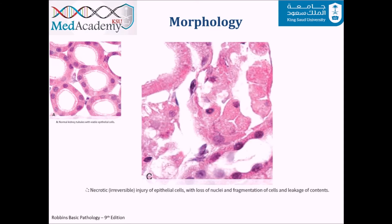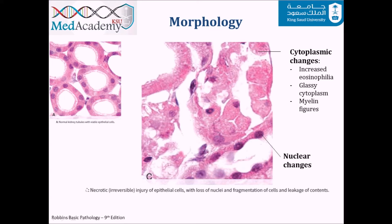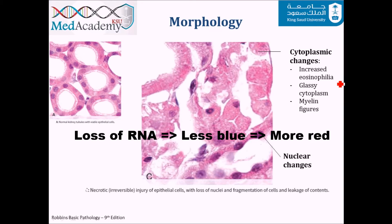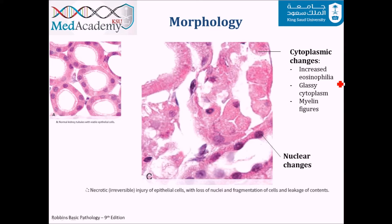In the necrotic cell, we have cytoplasmic changes and nuclear changes. In the cytoplasm, we're going to have increased eosinophilia — increased redness of the cytoplasm. This happens because RNA is basophilic and stains blue, and its loss increases redness; additionally, eosin binds to denatured proteins, intensifying eosinophilia. Second is glassy cytoplasm: normally the cytoplasm is heterogeneous, but when a cell is necrotic it loses all its glycogen, resulting in a more homogeneous-looking cytoplasm we call glassy cytoplasm. Lastly, myelin figures are also present.